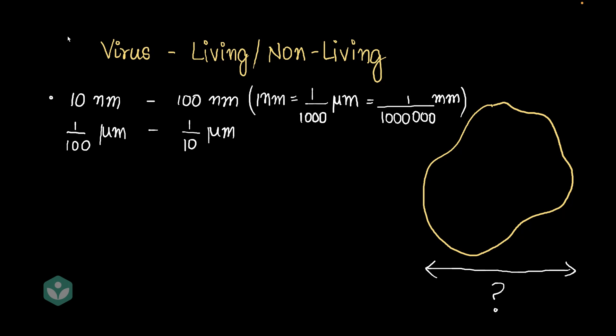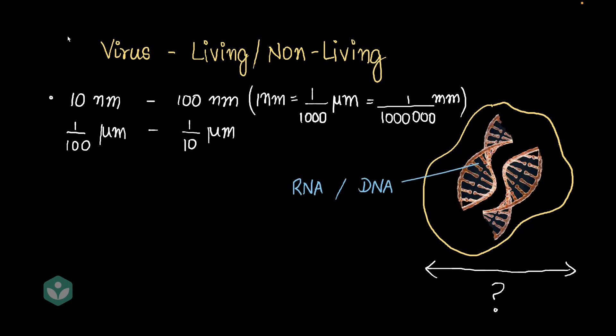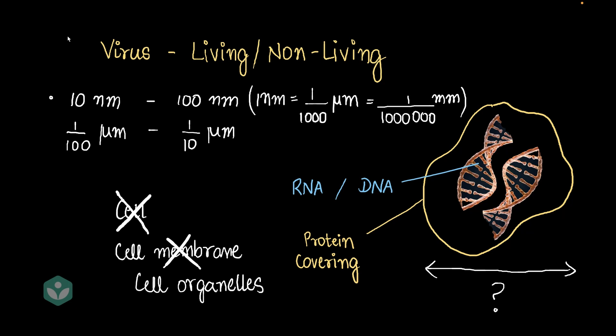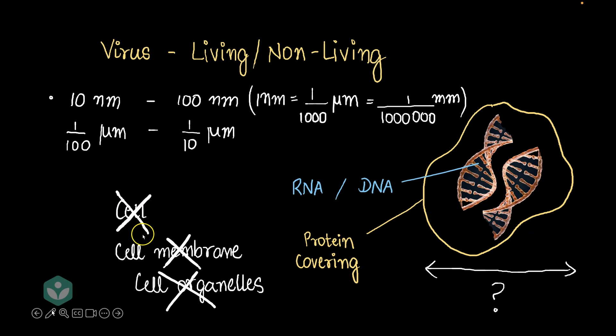So what is the virus actually made up of? It has DNA and RNA information stored inside of it, and that DNA or RNA information is stored inside a protective protein covering, or a protein sheath. That's it — that's all that the virus actually has. The virus does not have a cell per se — no cell membrane, no cell organelles. The virus is just DNA or RNA with a protein covering, and that's partly why you can't really call it a living organism, because it just doesn't have a cell — no mitochondria, no nucleus, none of those things.